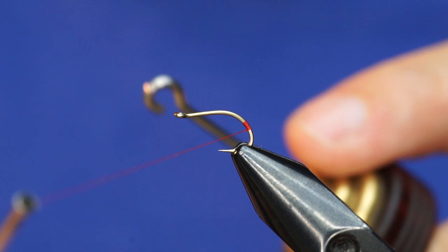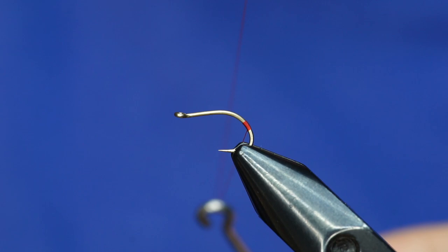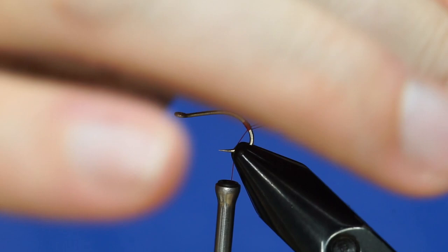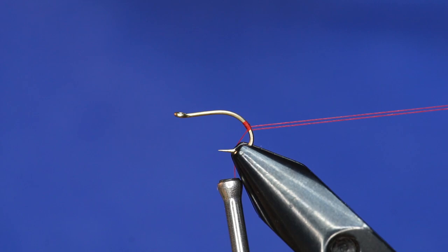This thread is going to serve as the ribbing as well. I'm going to grab my turbo dubbing spinner tool and make a dubbing loop. We'll twist this up for the rib here in a little bit, but I'm going to keep that off to the side for now.